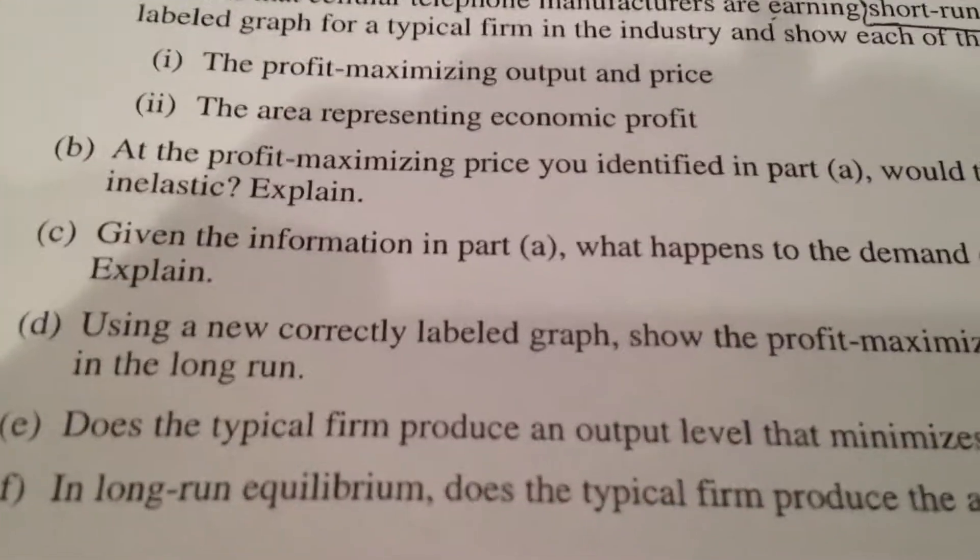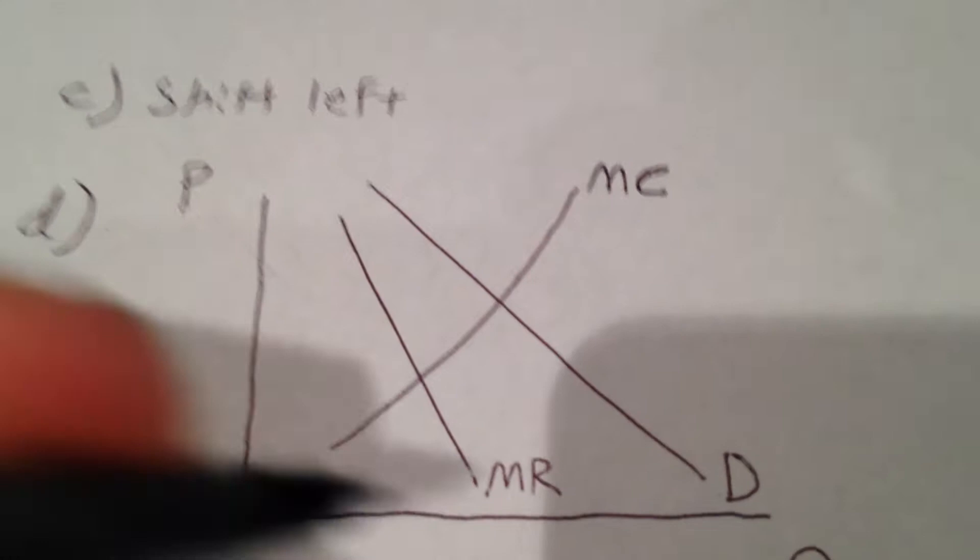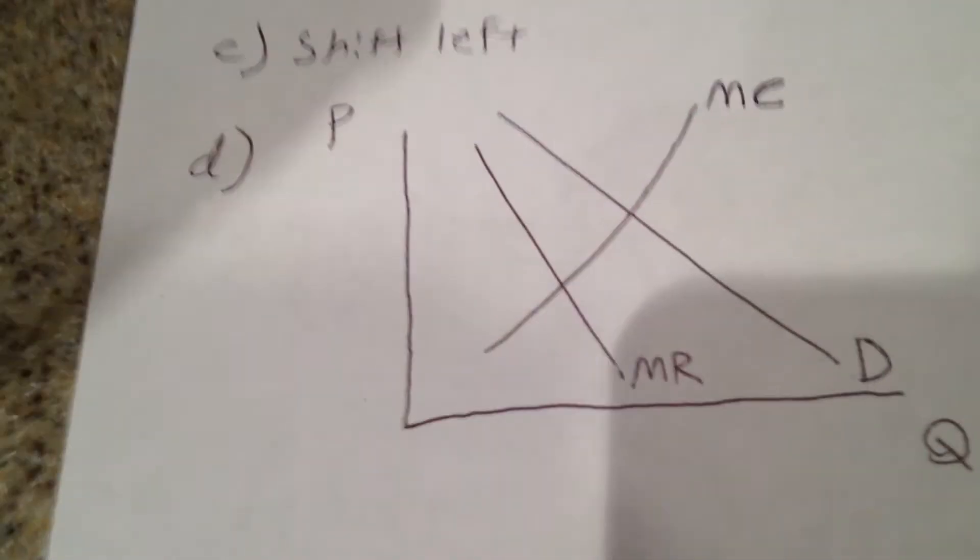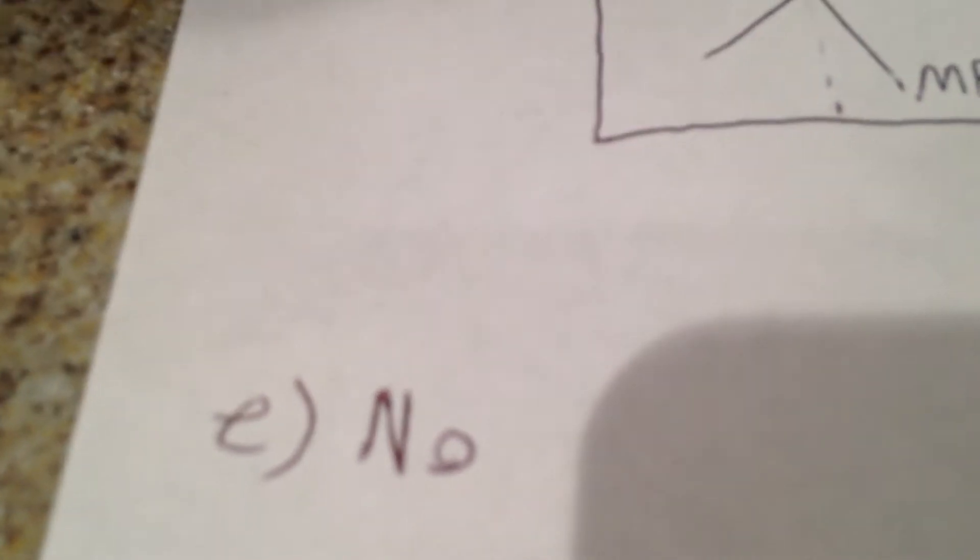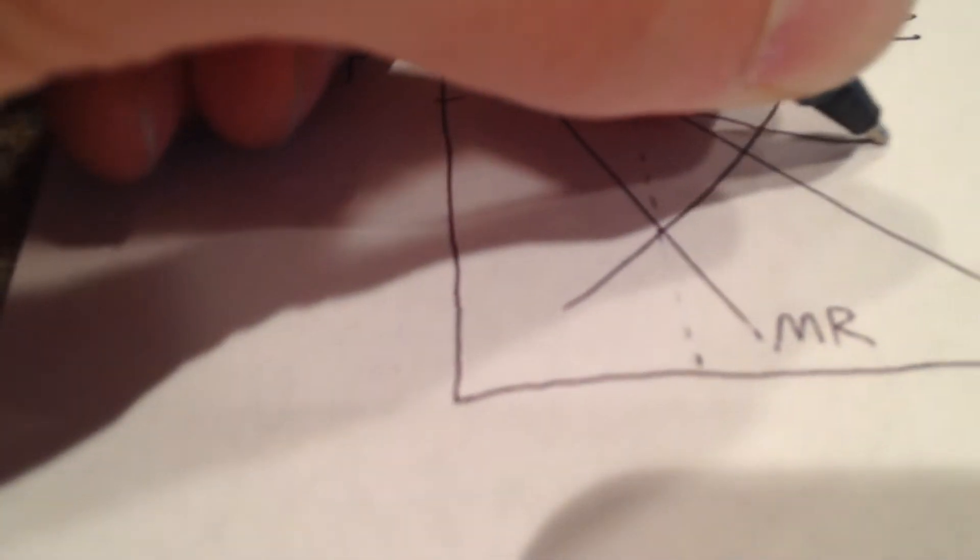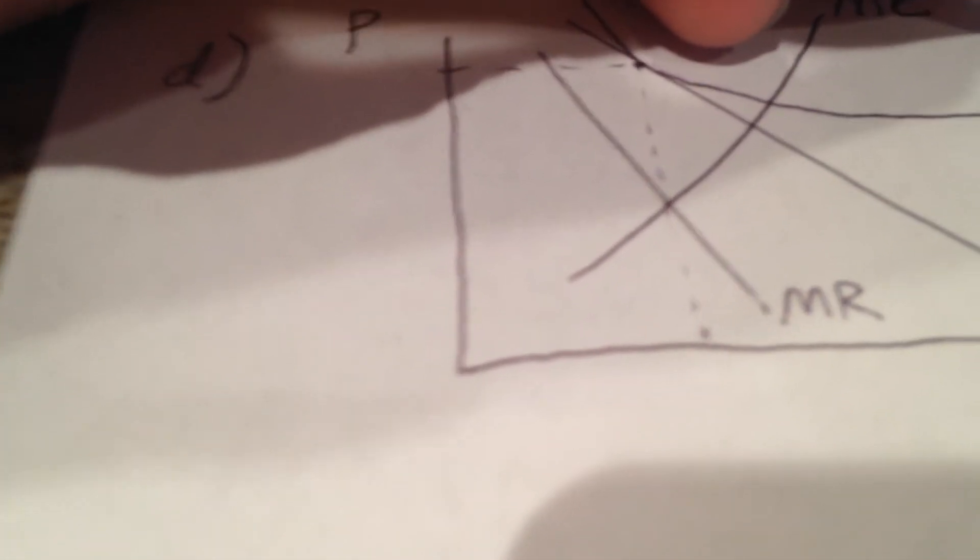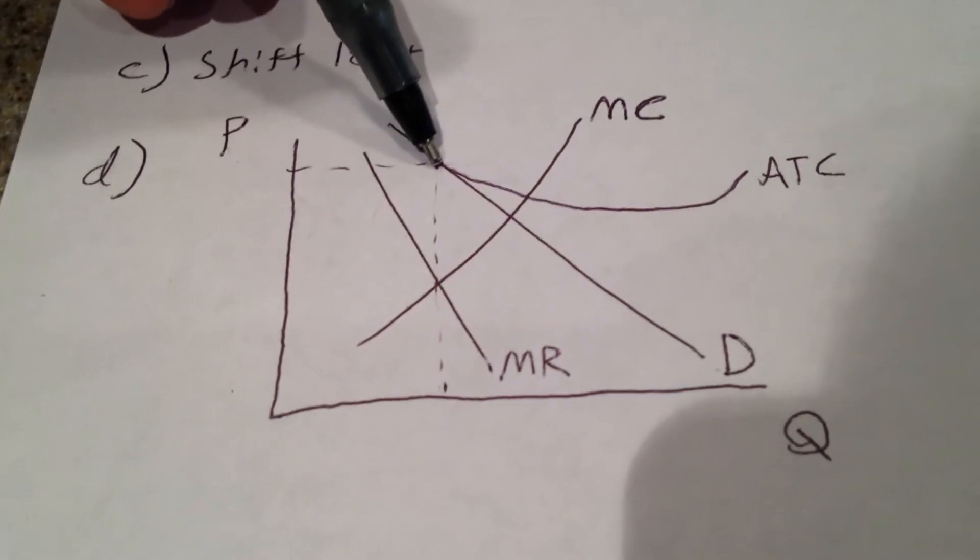Using a new correctly labeled graph, show the profit-maximizing output and price for the typical firm in the long run. Well, we have a similar graph here, but since the demand curve has shifted left, which happens in the long run, it will now intersect the ATC curve at the profit-maximizing output. So profit-maximizing output is right here. So right here where ATC is going to intersect, and it's going to come down and then back up, and there is our ATC curve. At this point, we know that price equals ATC, so that's zero.